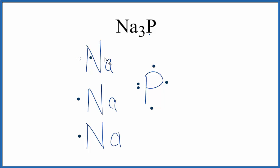So the metal, the sodium, transfers an electron. Then this sodium transfers an electron, and this one transfers an electron. And now this phosphorus has an octet.